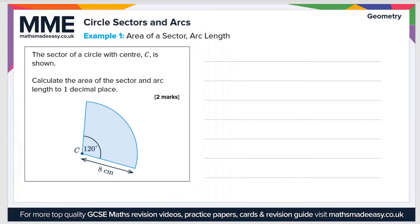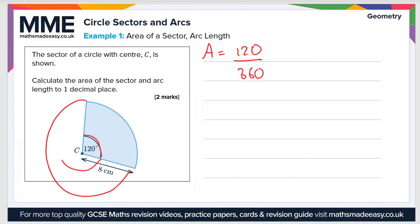Now let's look at a quick example question. The sector of a circle with center C is shown — calculate the area of the sector and the arc length to one decimal place. First, let's calculate the area. The area of a sector equals the angle — which in this case is 120 degrees — divided by 360, times the area of the full circle, which is pi r squared.